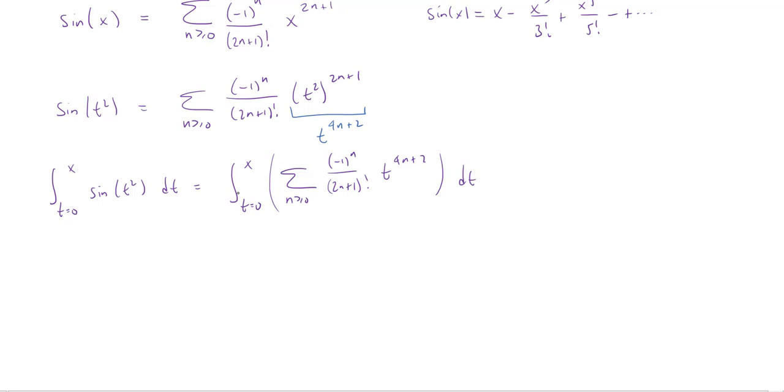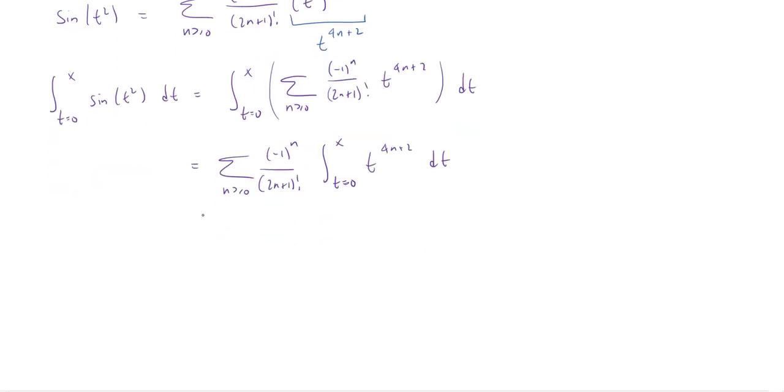Which means when I swap the integral and summation, the summation can drag along this extra coefficient, this minus 1 to the n over 2n plus 1 factorial. So I'm going to get a series starting at 0 minus 1 to the n over 2n plus 1 factorial. And then I'm going to integrate from 0 to x just t to the 4n plus 2 dt. And that's going to be really, really easy.